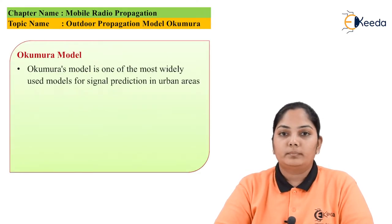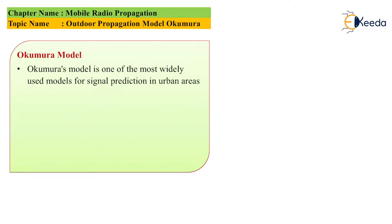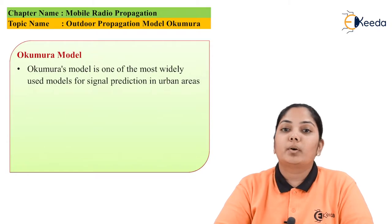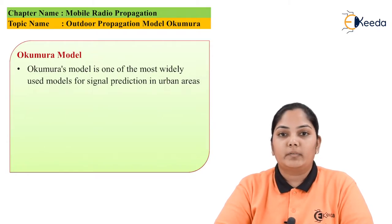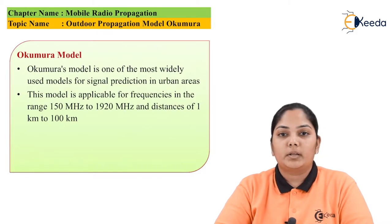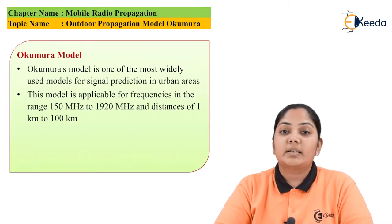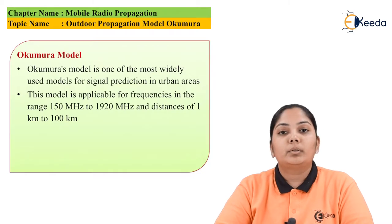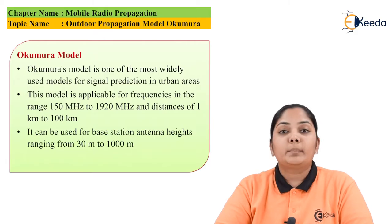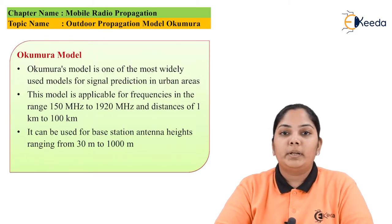The Okumura model is one of the most widely used models for the estimation of the received power in urban areas. This model is applicable for frequencies ranging from 150 MHz to 1920 MHz and distances of 1 km to 1000 km. It can be used for base station antennas that have heights from 30 m to 1000 m.